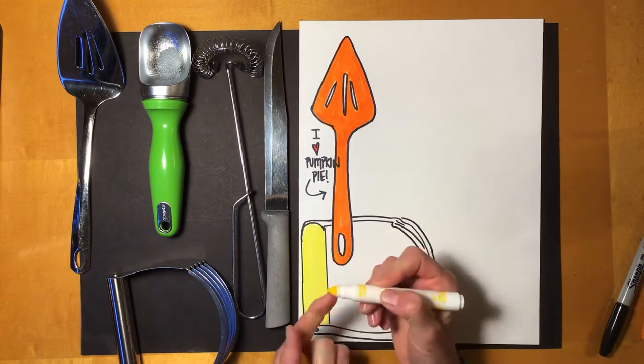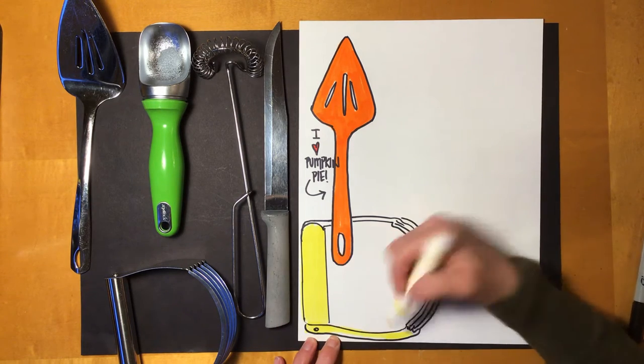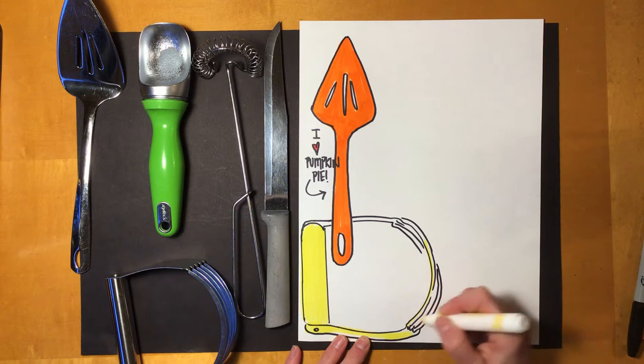So this pastry blender is going to be a nice bright yellow. I'm going to use the broad side of the marker when I've got a big area, and then when I've got a small area, I'll use the tip.